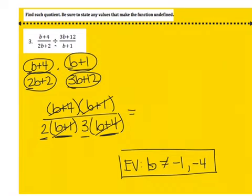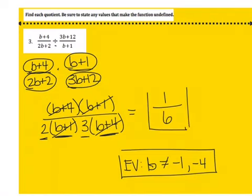On top I need a placeholder — there's an imaginary 1 up there — and I have 2 times 3 on the bottom, giving me 6. So my final answer is 1 over 6.